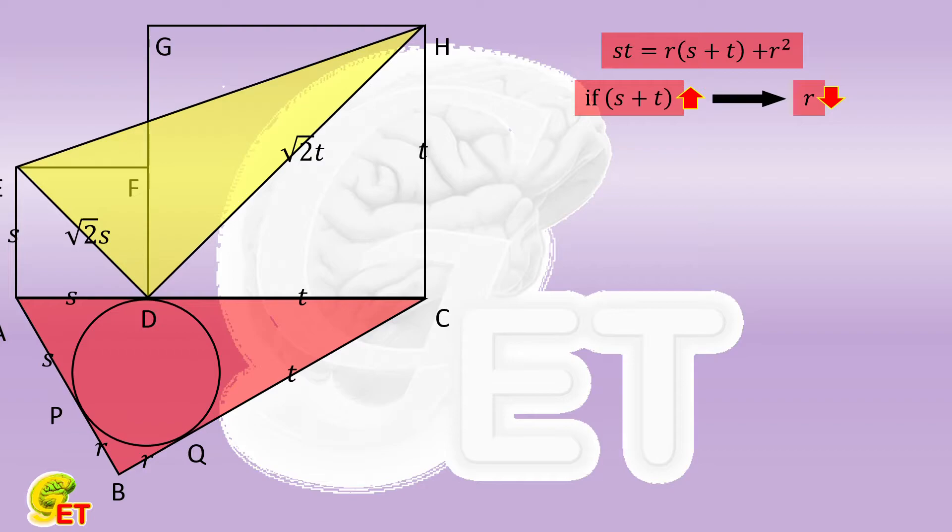Otherwise, S times T would increase as well, rather than keep as a constant. Therefore, in the following, what we need to prove is only that the summation of S and T increases in the new triangle.